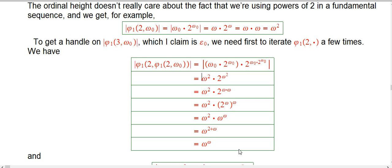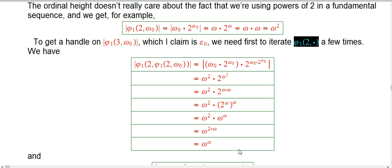I made a claim before and said you're not going to believe this unless I make it more precise. Phi_1 of 3-comma-omega_0 is a certain tree ordinal, and now I can make more precise what I said about it being at the epsilon_0 level. In fact, the ordinary ordinal height of this is exactly epsilon_0. So what's the definition of phi_1 of 3-comma-omega_0? You're going to start iterating the 2-version of phi_1 an infinite number of times. Let's start iterating it a few times to get a sense of that.